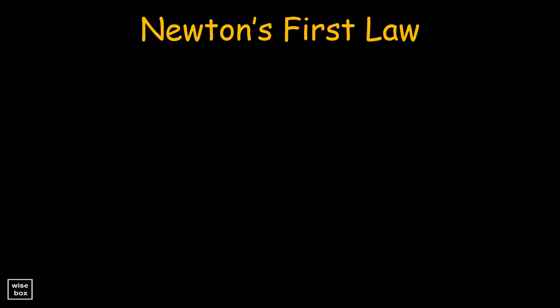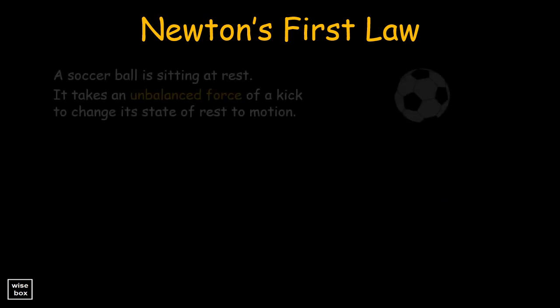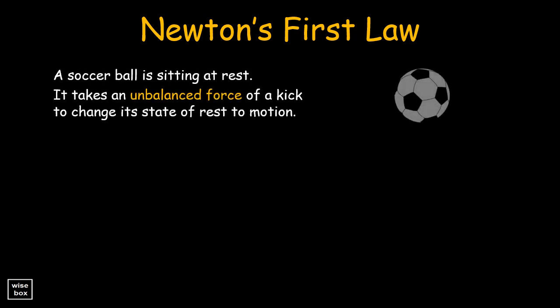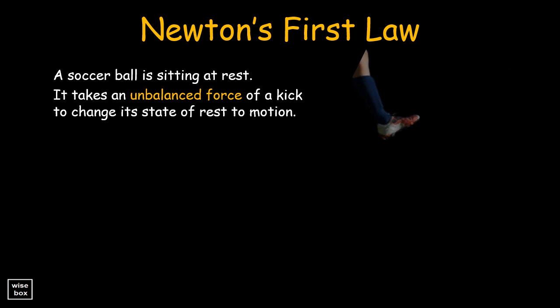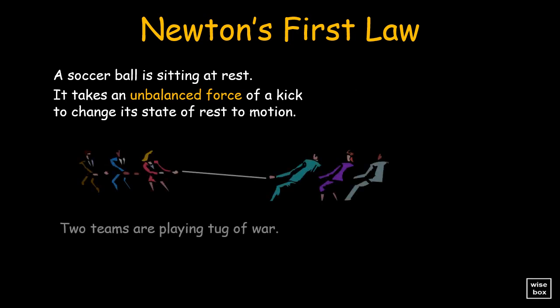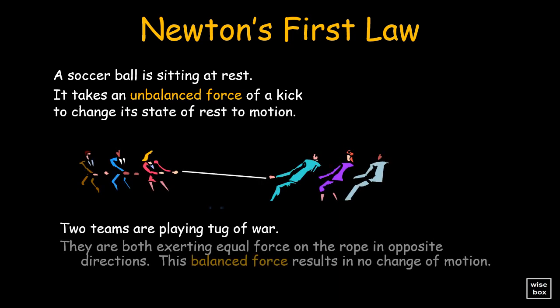Let's have some examples. A soccer ball is sitting at rest. It takes an unbalanced force of a kick to change its state of rest to motion. Two teams are playing tug of war. They are both exerting equal force on the rope in opposite directions. This balanced force results in no change of motion.